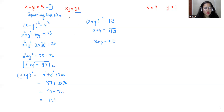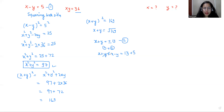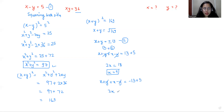Now I have two equations: equation 1 (x minus y equals 5) and equation 2 (x plus y equals plus or minus 13). Adding both equations, taking plus 13: x plus y plus x minus y equals 13 plus 5, so 2x equals 18 and x equals 9. Taking minus 13: x plus y plus x minus y equals minus 13 plus 5, so 2x equals minus 8 and x equals minus 4.